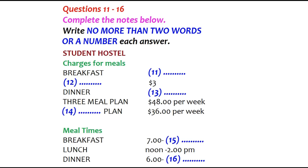Now listen carefully and answer questions 11 to 16. Excuse me, I want to ask you about the charges for meals. Are they the same as they were last year? No, I'm afraid they're not. We've managed to keep most of them the same, but we've had to increase the charge for breakfast. How much is it now? It's $2.50 — it used to be $2. I see.